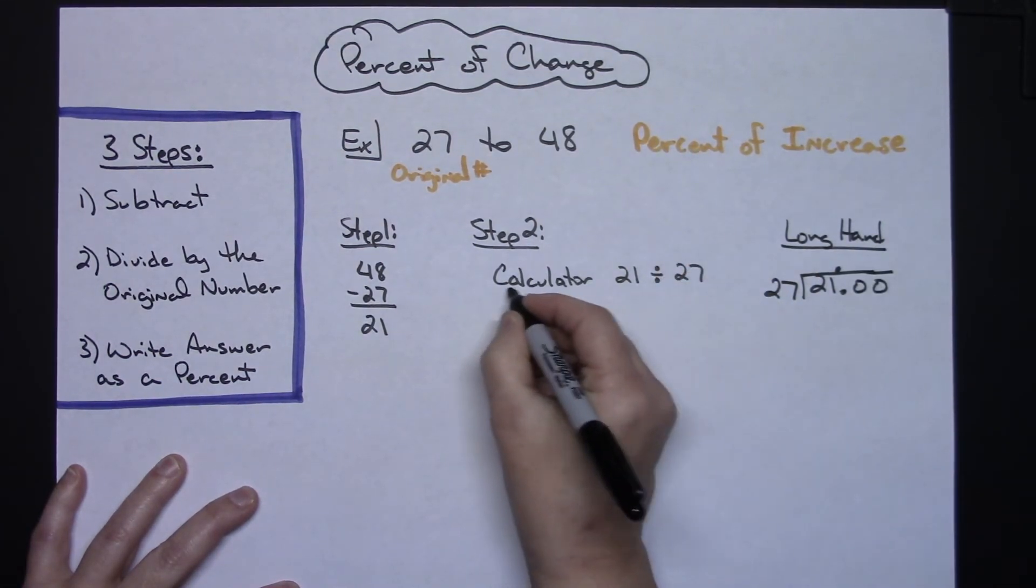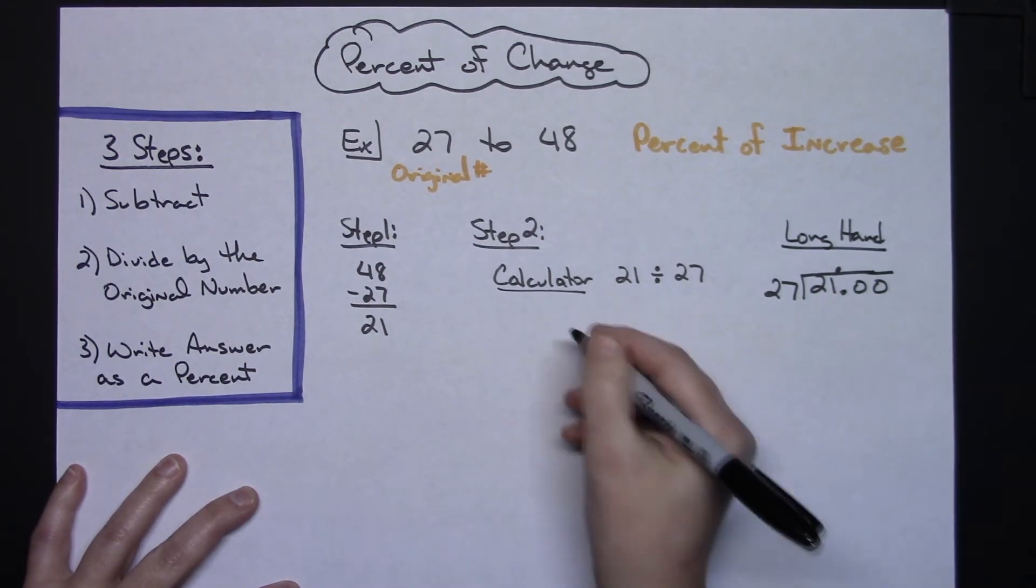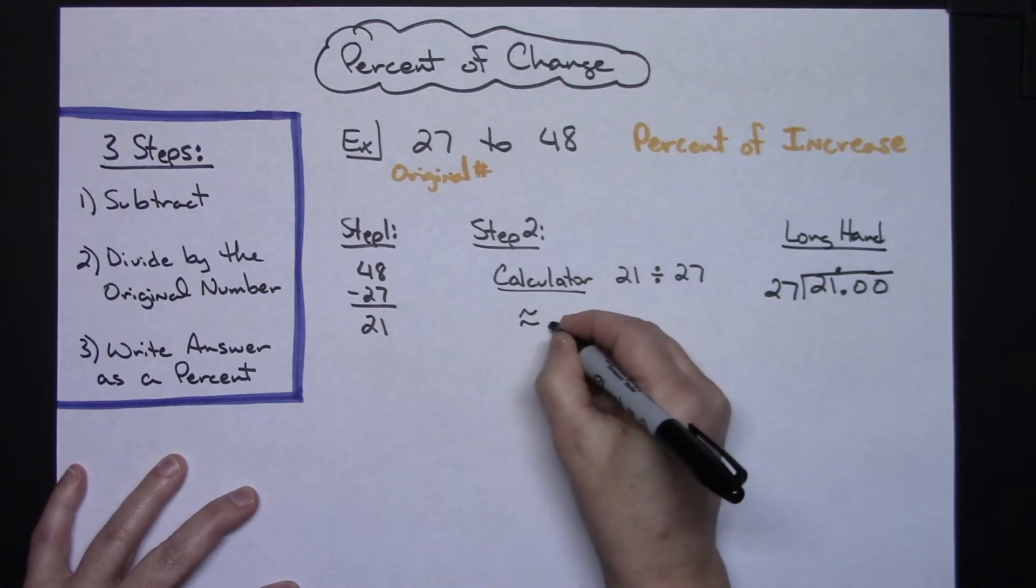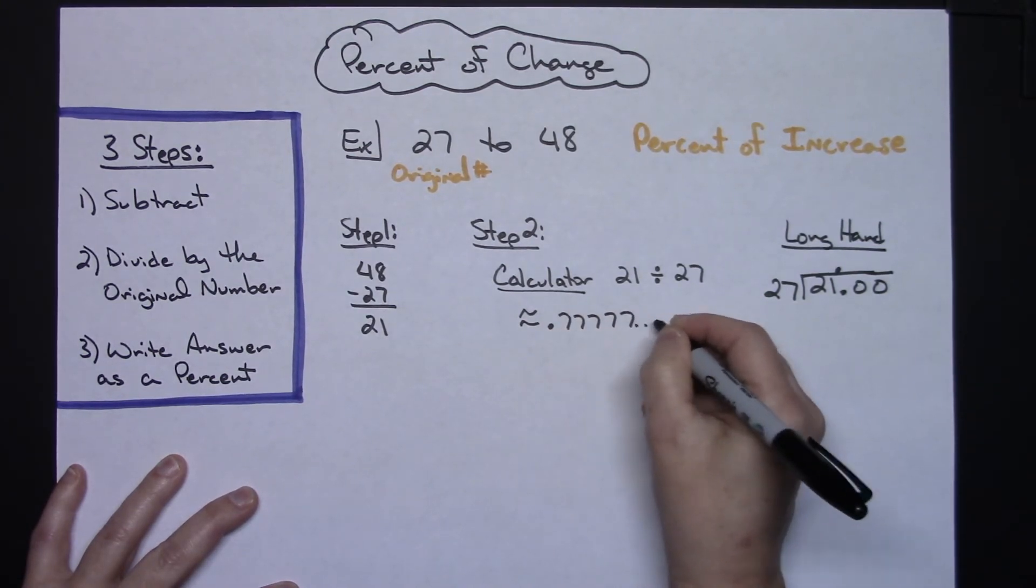Let's assume though that we are using a calculator here. When you do the calculator, you are going to get an approximate answer because this one turns out to be 0.77777 repeating.